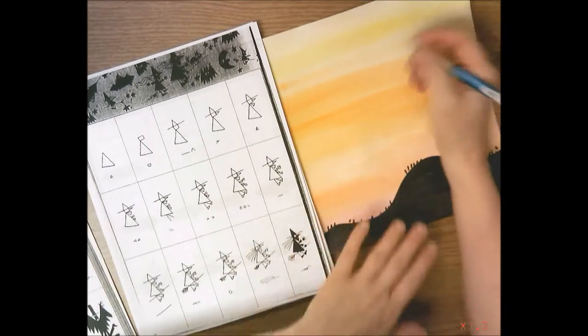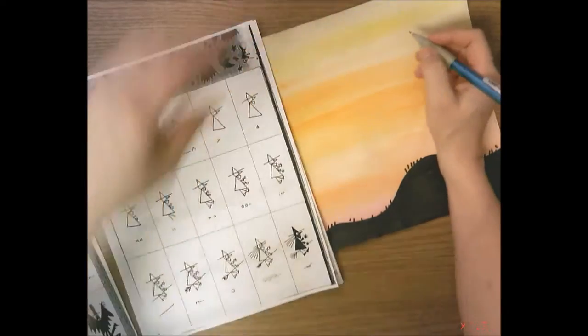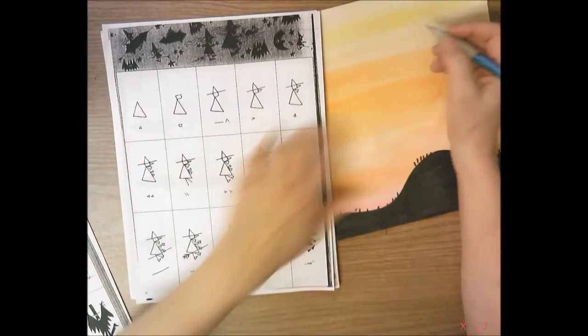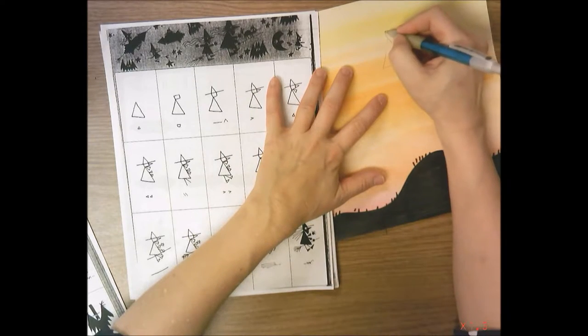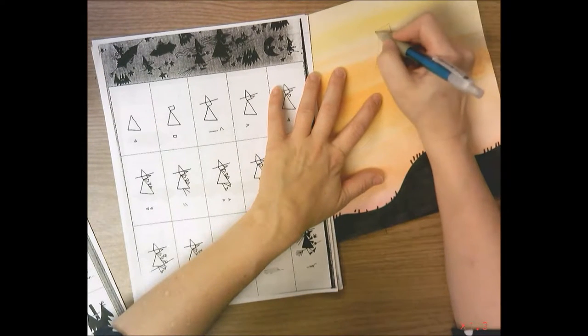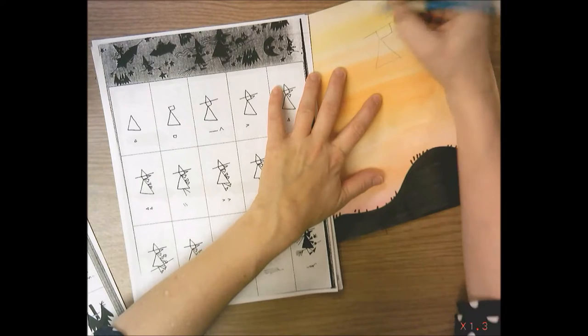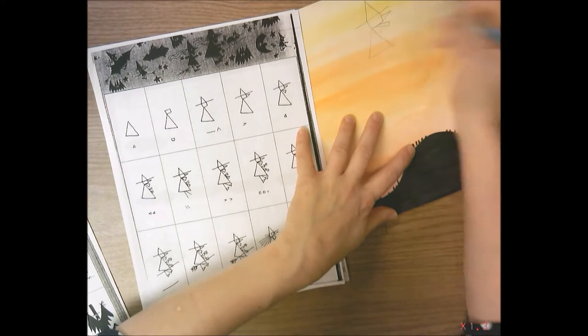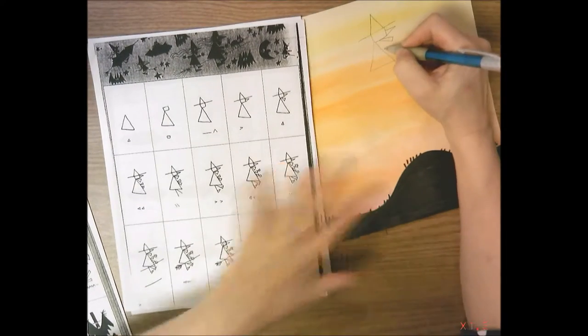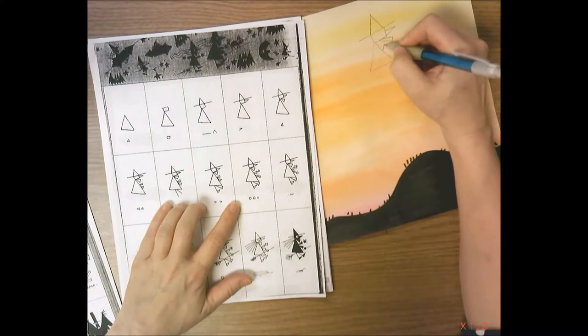Now I think I'm going to put a witch flying on her broom. If I follow the steps, I start with a triangle, then a rectangle, then a long line, the nose, another triangle for the jaw. Now I'm on this step here with the hands or the arms.